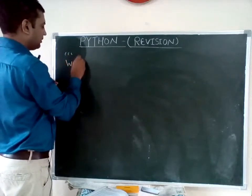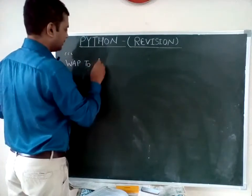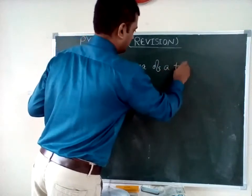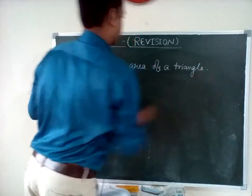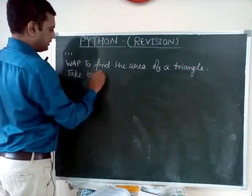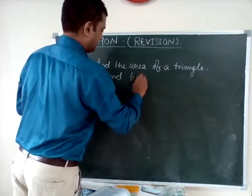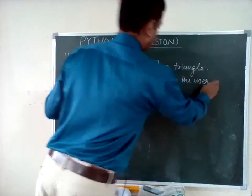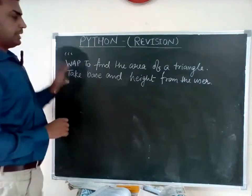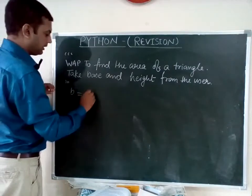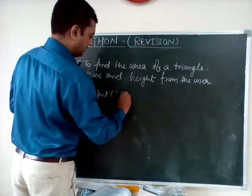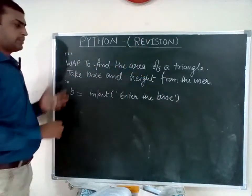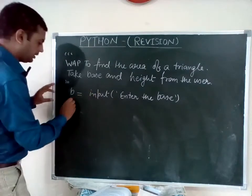The question is: write a program to find the area of a triangle — take base and height from the user. Again you will use three apostrophes to end the comment. Now b is equal to input — enter the base. What is the problem here, you can easily understand — we have to write the data type.